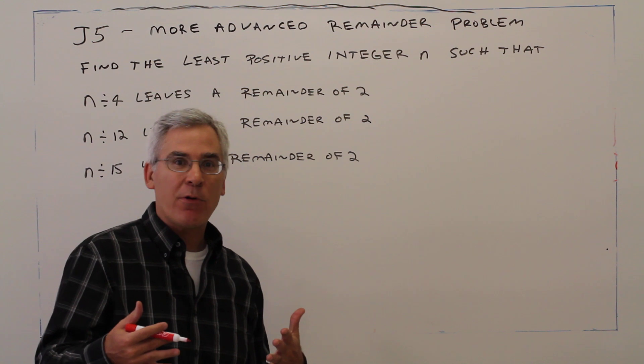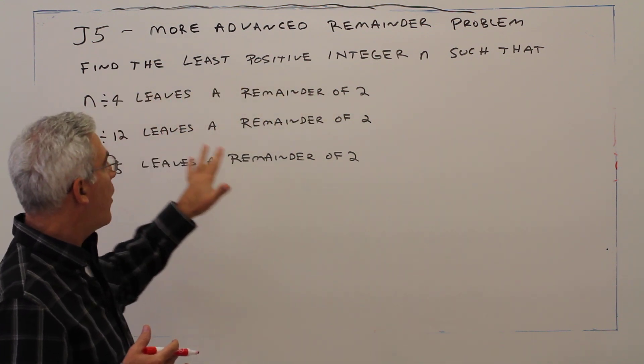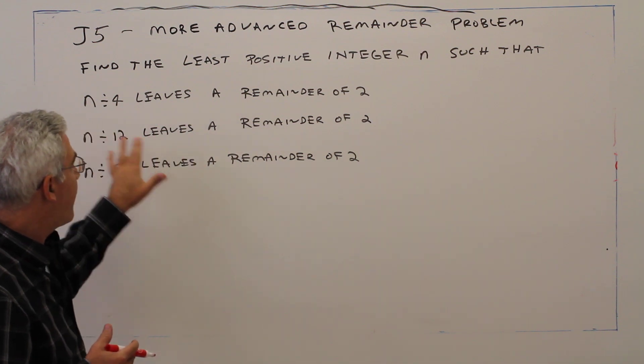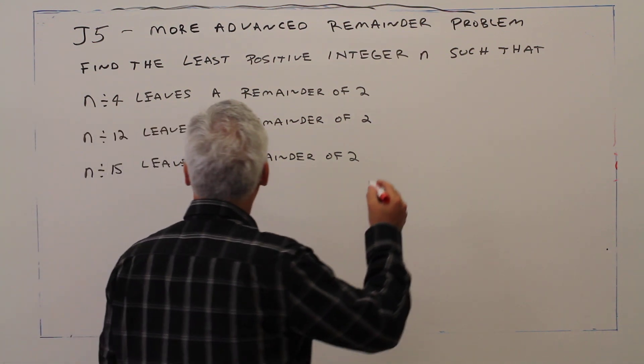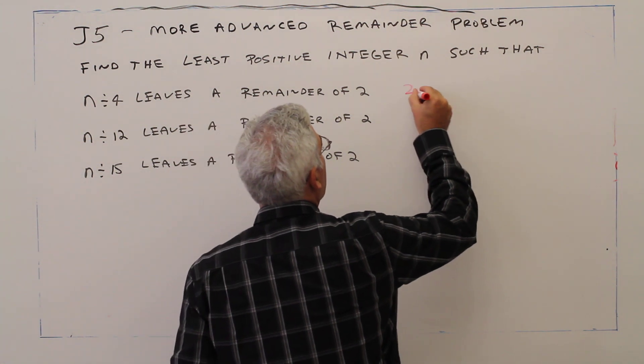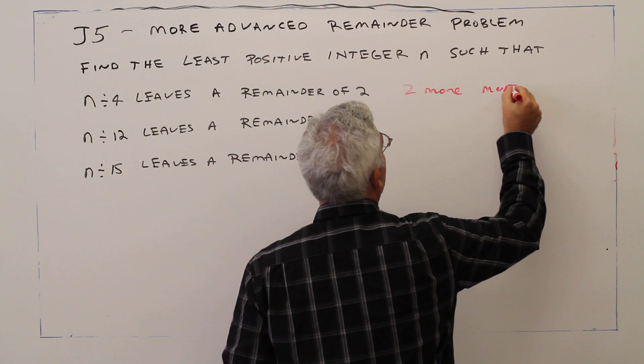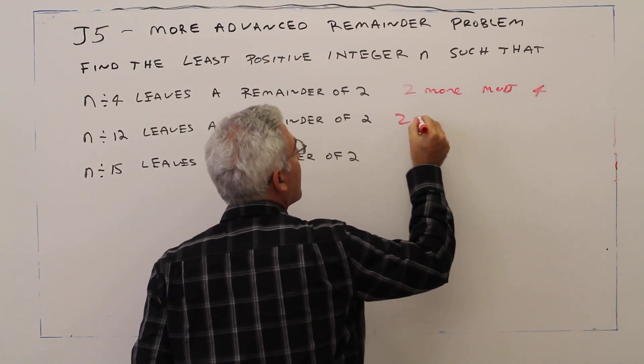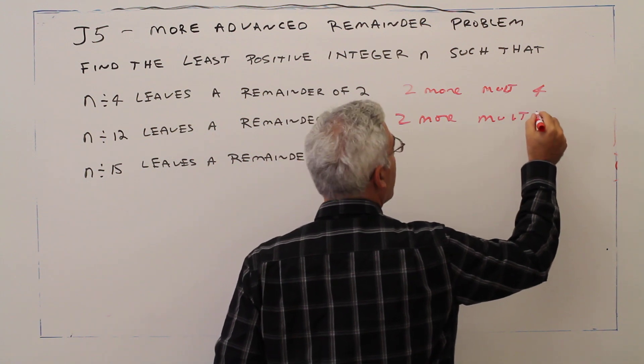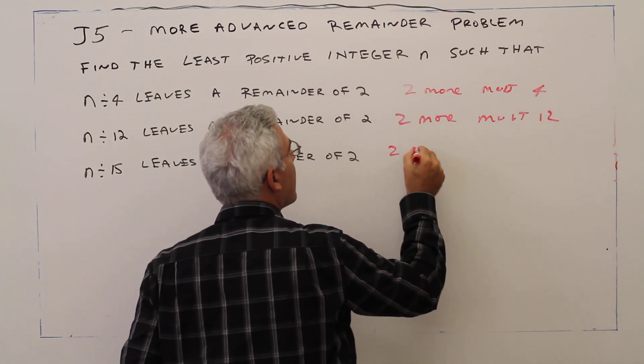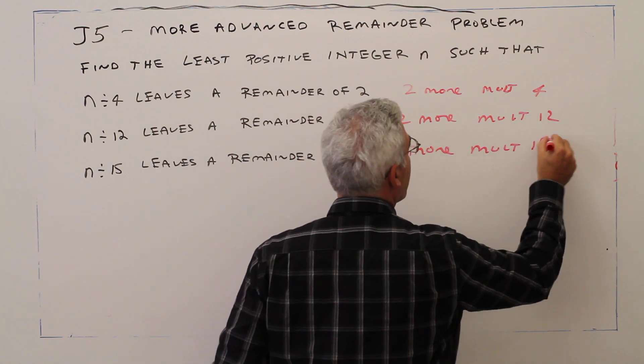So when we have a remainder of 2, that basically means we're two more than a multiple of 4, two more than a multiple of 12, and two more than a multiple of 15. I'll just write that down. Two more than a multiple of 4, 12, and 15.